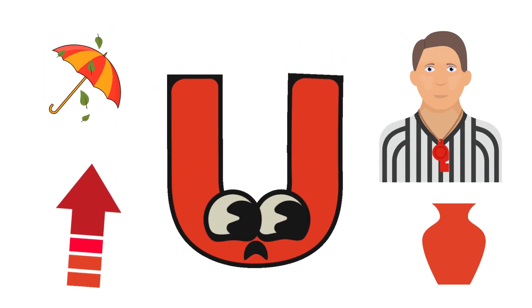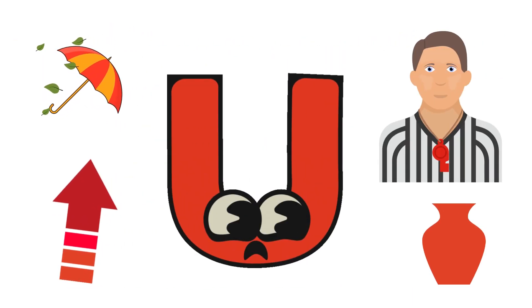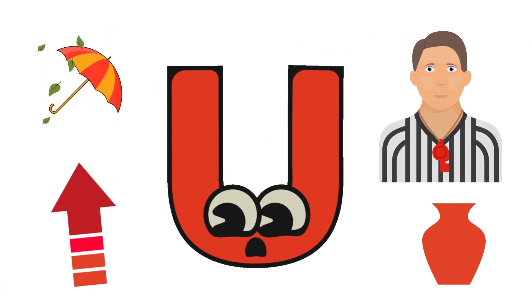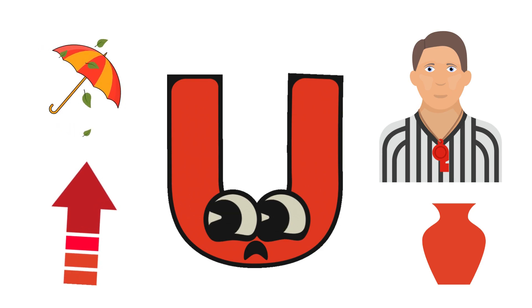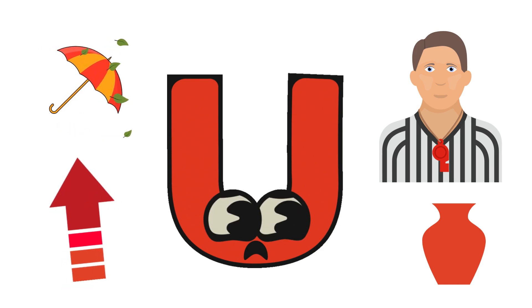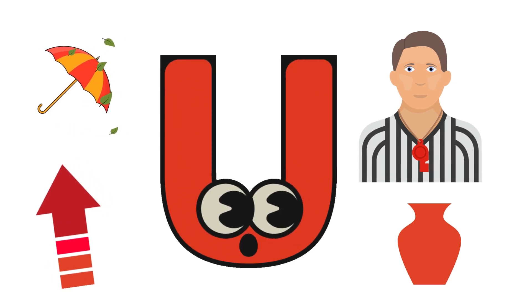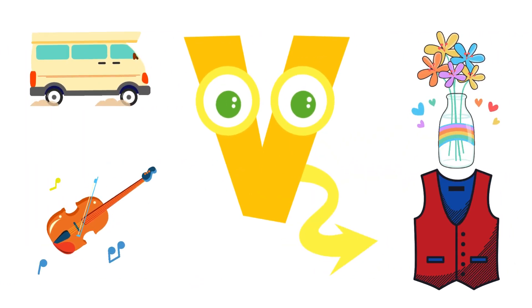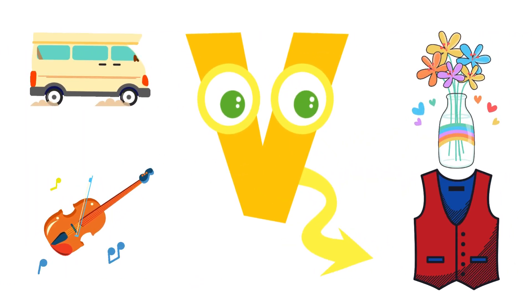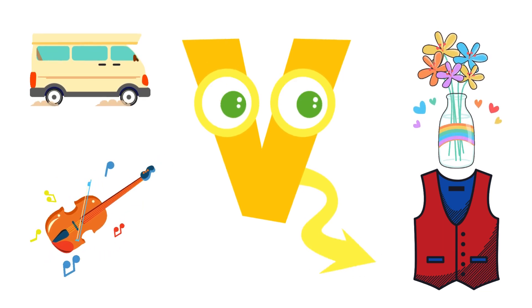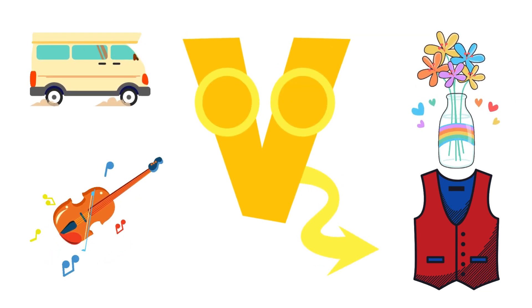U for umbrella, umpire, up, urn. V for van, vest, vase.